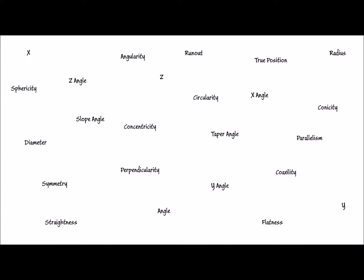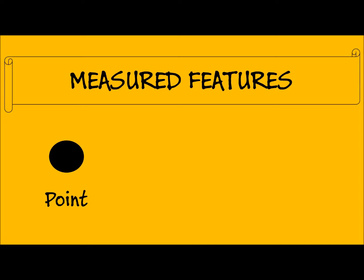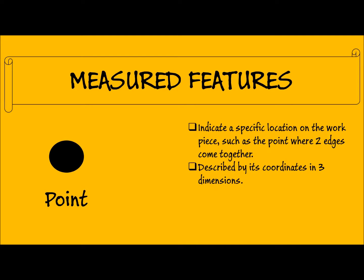I will introduce the first measured feature, the point feature. The point feature is used to indicate a specific location on the workpiece, such as the point where two edges come together. It is described by its coordinates in three dimensions.